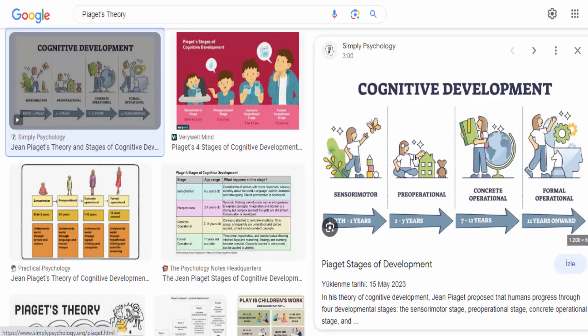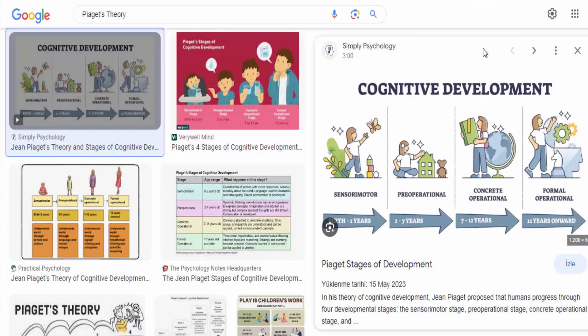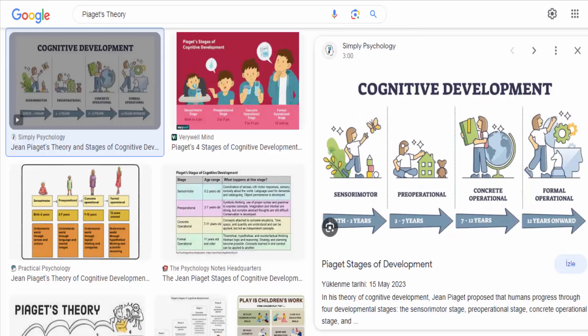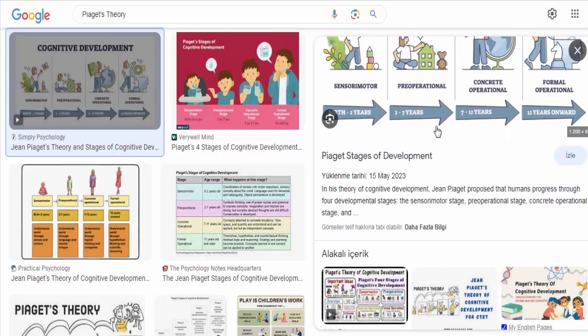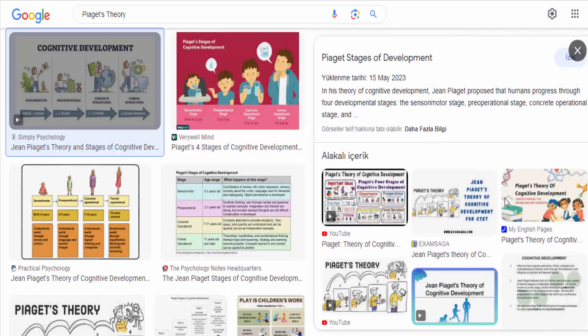Piaget's theory has had a significant influence on the field of developmental psychology, and it highlights the active role of children in their own learning and development. However, it has also been subject to criticism and modifications over the years, with some researchers emphasizing the importance of social and cultural factors in cognitive development.